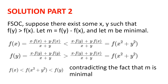Doing a similar thing on f of y, we get that f of y equals x times f of y plus y times f of y divided by x plus y, which is greater than x times f of y plus y times f of x over x plus y, which is equal to f of x squared plus y squared. So we get that f of x is less than f of x squared plus y squared, which is less than f of y, contradicting the fact that m is minimal, as we get that f of y minus f of x squared plus y squared is a positive integer less than m.